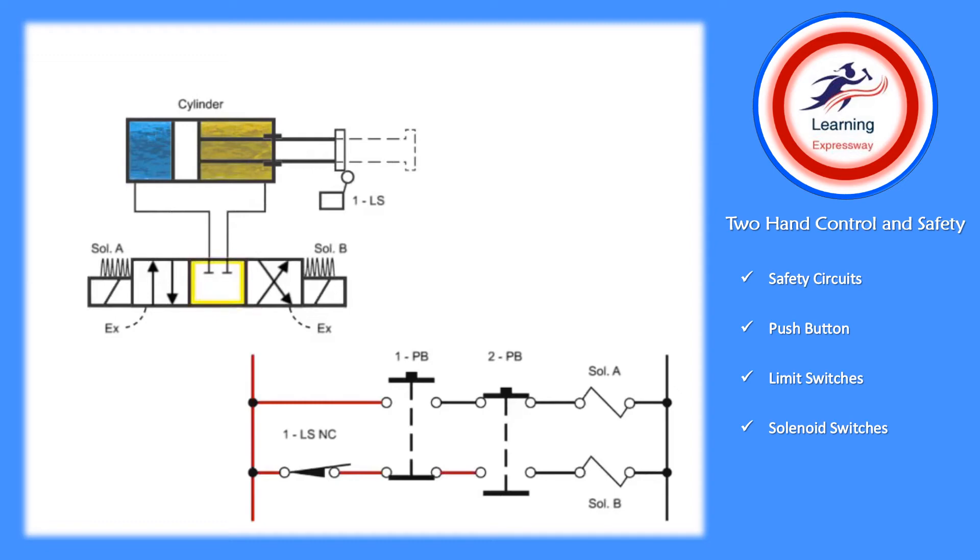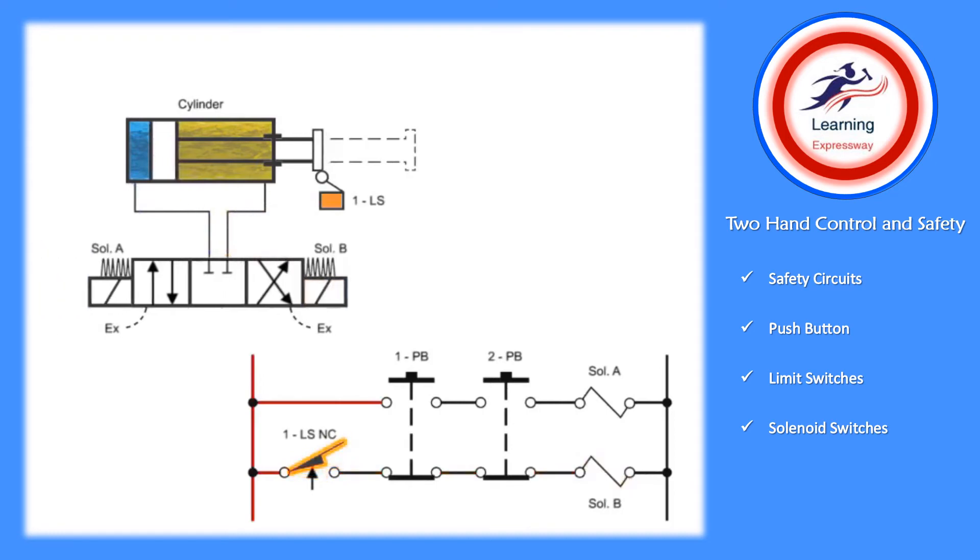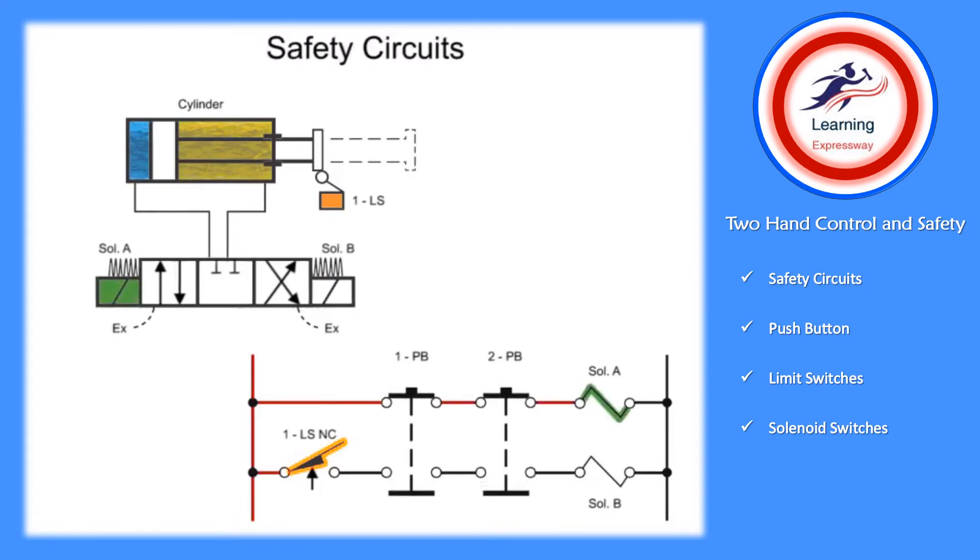If both buttons are released while the cylinder rod is extended, limit switch one allows solenoid B to become energized. The valve will shift to allow fluid into the rod end of the cylinder, causing it to retract. When it reaches the end of its stroke, it engages the limit switch which opens the circuit and prevents electricity from flowing until the two start buttons are engaged once again.